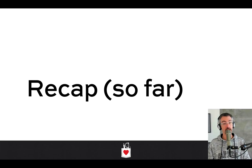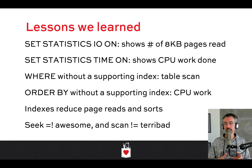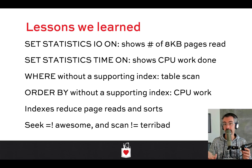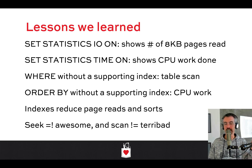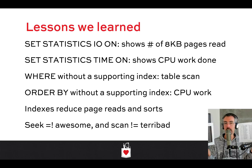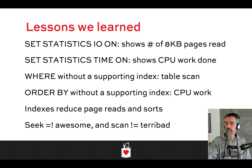To summarize: SET STATISTICS IO shows you the number of 8k pages you're reading — use that a lot. SET STATISTICS TIME ON is less repeatable but useful for distinguishing between I/O-heavy and CPU-heavy problems. When you do a WHERE without a matching index, you're scanning the whole thing. You really need an index that supports your WHERE clause. Similarly, an ORDER BY without a supporting index will burn CPU and allocate a lot of RAM to satisfy the query.